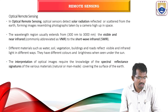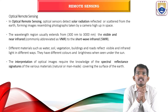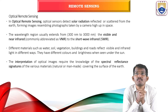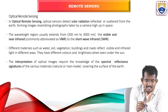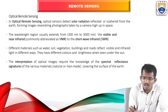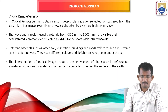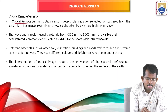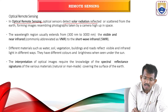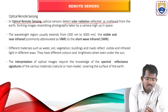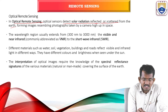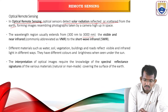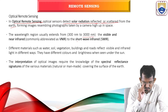Optical remote sensing detects solar radiation reflected or scattered from the earth's surface, forming images resembling photographs taken from a camera high up in space. The wavelength region usually extends up to 3000 nanometers — covering visible infrared radiation and short wavelength infrared radiation.